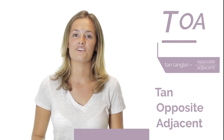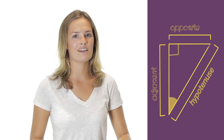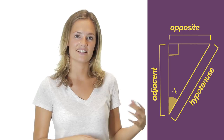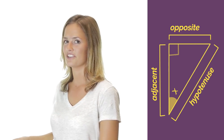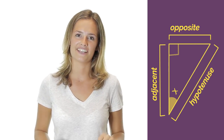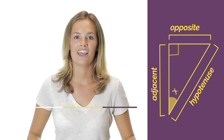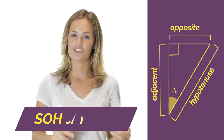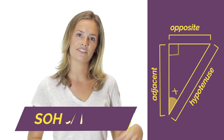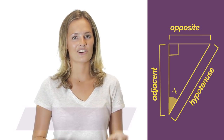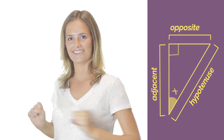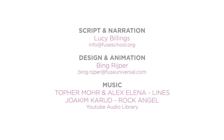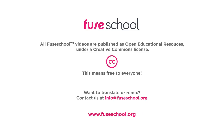So from this video you should be able to label the sides — the adjacent, opposite, and hypotenuse — on a right angle triangle, and you should remember the word SOHCAHTOA and that it represents sine, cos, and tan. I'll see you next time. Bye.